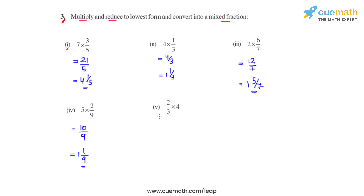Similarly, solving the fifth bit which says 2 over 3 times 4. The product of these two will be 2 times 4, which is 8, divided by 3. On division we get the quotient as 2 and the remainder also as 2. So the mixed fraction for this will be 2 and 2 thirds.